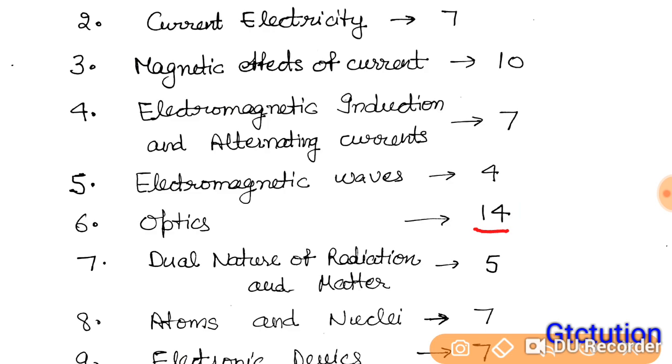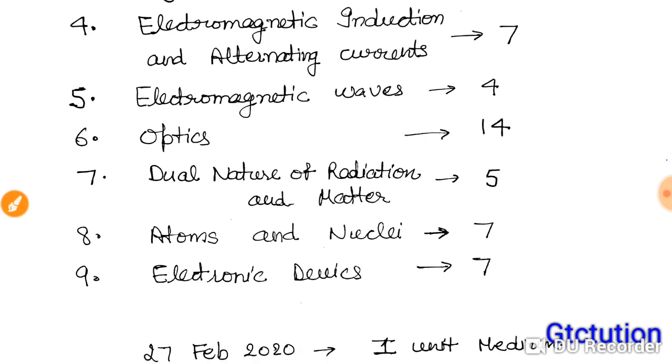Dual nature of matter and radiation is very easy and small, about 5 marks. Atoms and nuclei is a complex chapter with some plus one questions. This is difficult and moderate. Electronic devices has reduced content, it's easy, about 7 marks.